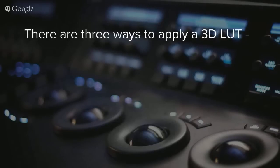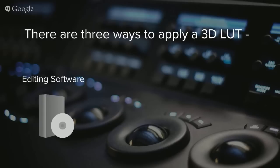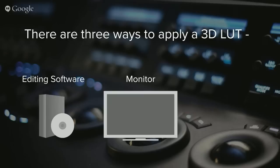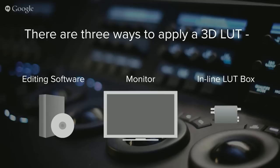There are three ways to apply a corrective 3D LUT. You can apply one in the creative, editing, or finishing software, which we covered in the previous webinar using DaVinci Resolve — if you missed that, you can click the link here. You can load one into the monitor itself, which is what we'll be showing you today, or in an inline 3D LUT box, which we will cover in next month's webinar.